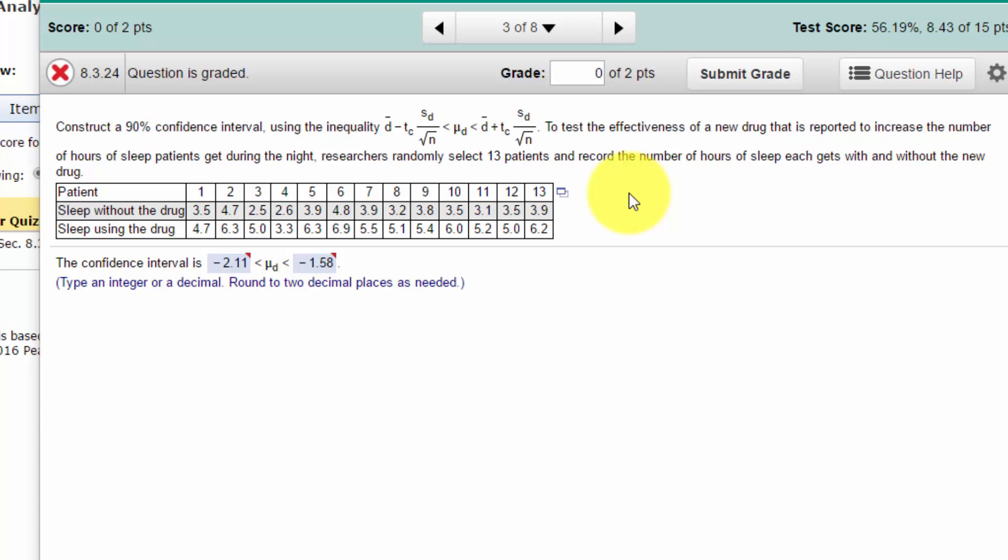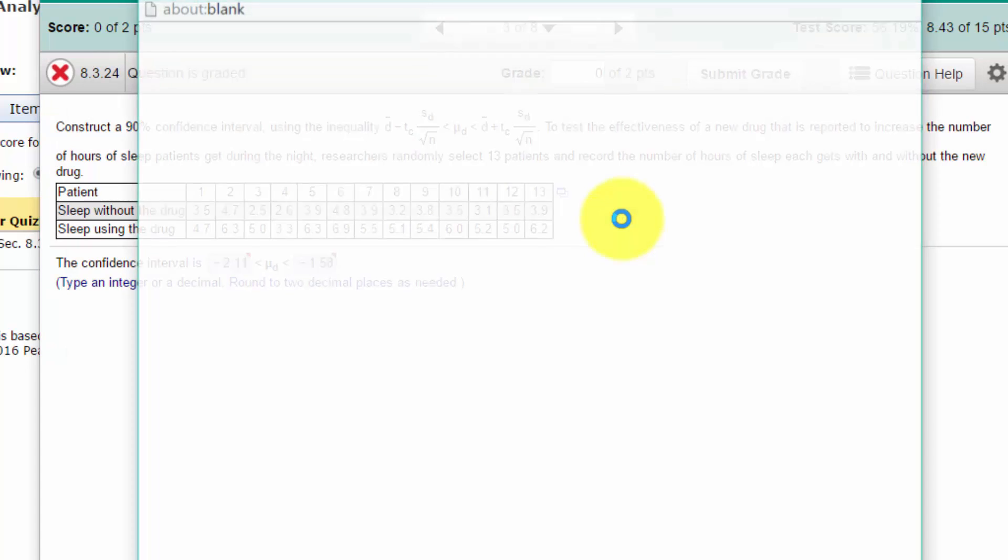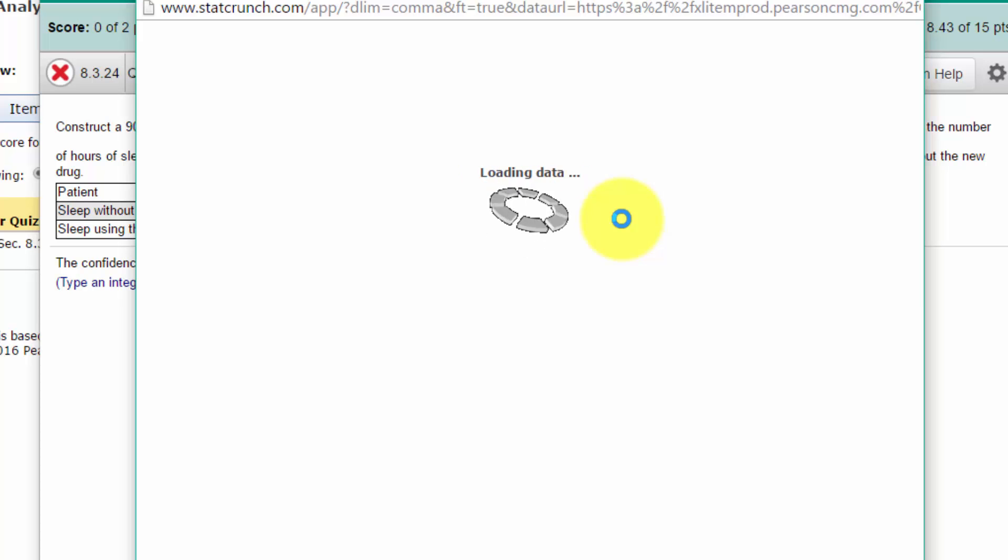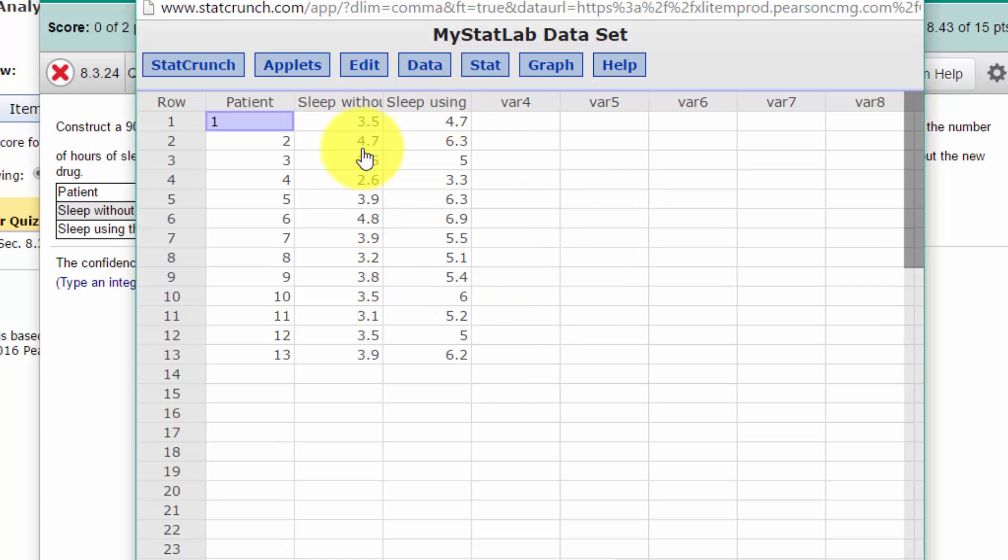If for some reason it's not built in on the quizzes, you can go to statcrunch.com and open it up in a separate window. You can click on this little icon, and if you've got this in MyStatLab, even on quizzes, you should be able to open StatCrunch. It loads the data—we've got three columns.